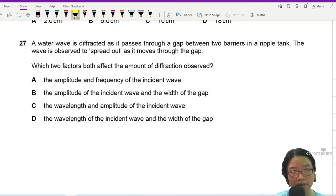Now the key words here: number one is diffraction, number two pass through two barriers in a gap in a ripple tank. I'll draw, so it's a bit like you have the gap.